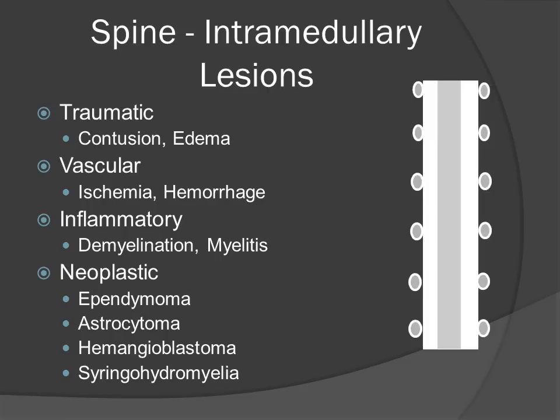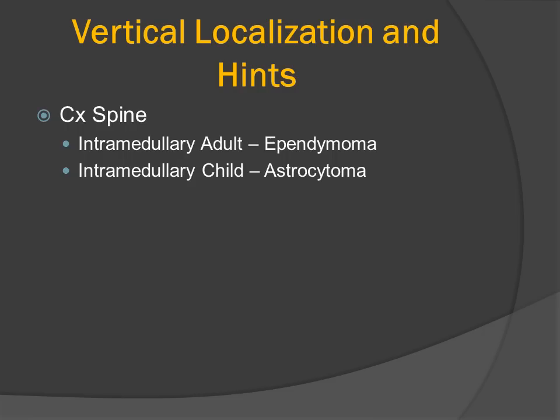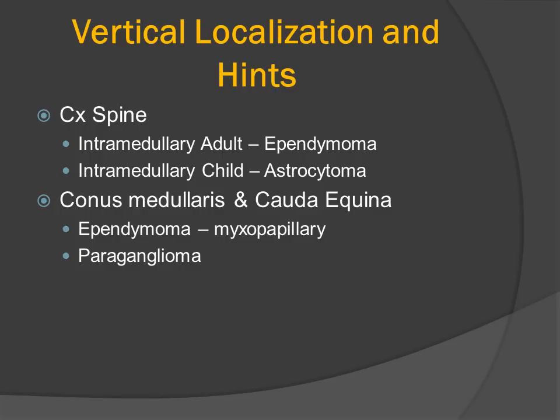When we consider intramedullary lesions, we're going to primarily be focusing on neoplastic processes. The most common intrinsic neoplasm of the spinal cord will be a glioma, usually an ependymoma. Cervical spine intramedullary lesions in adults are usually an ependymoma, while the same location in a child would be an astrocytoma.